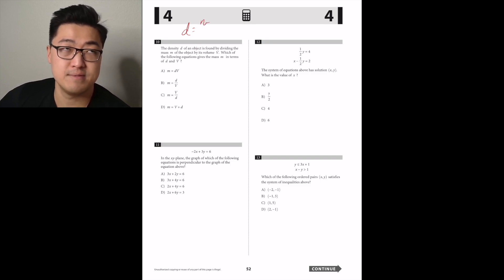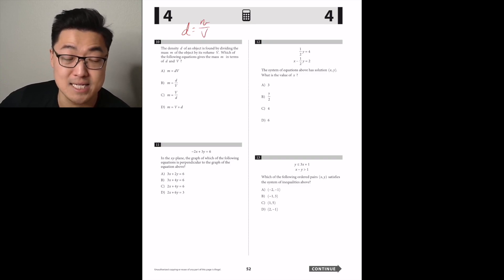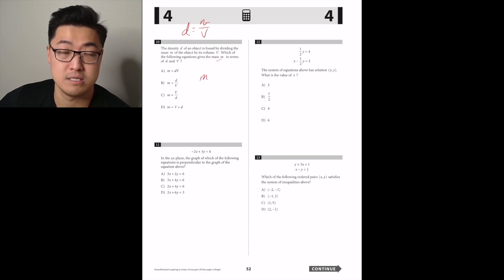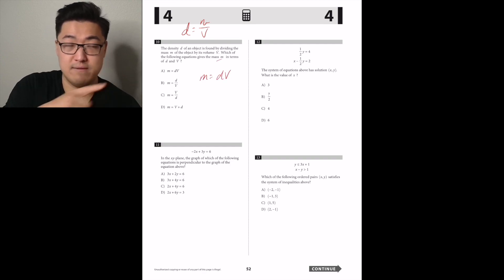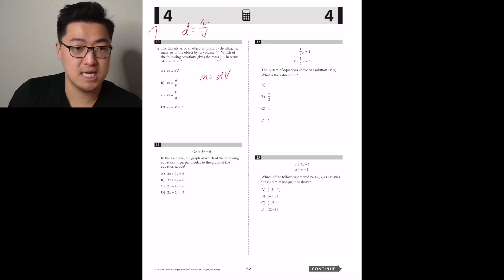The density D of an object is found by dividing its mass by its volume: D equals M over V. Which equation gives mass in terms of D and V? You just move the V over — mass equals V times D. Answer A.